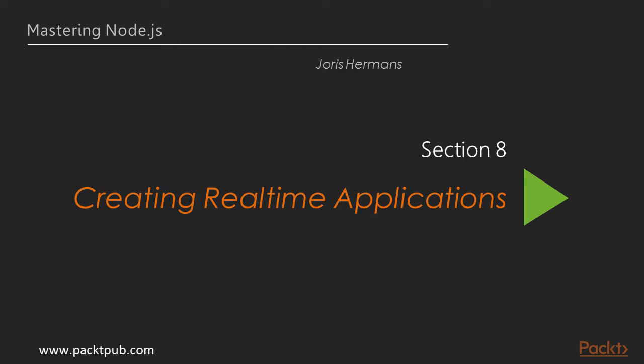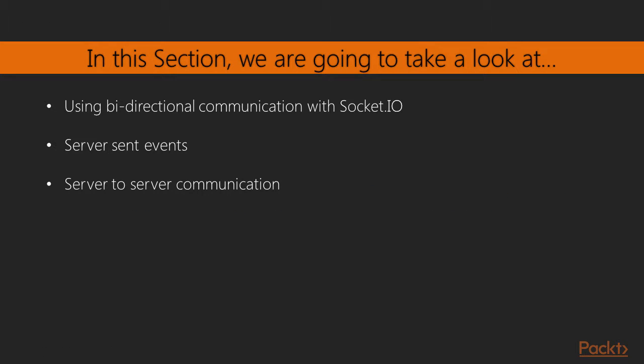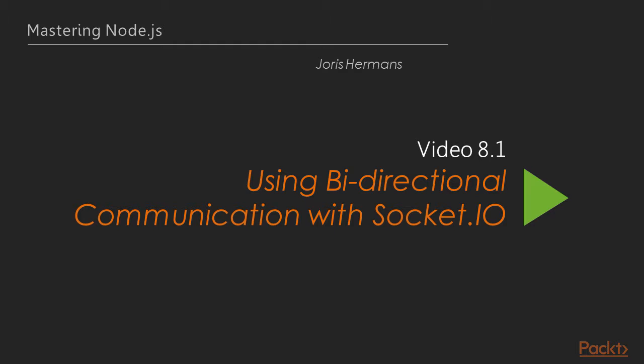Welcome to section 8: creating real-time applications. We will see how to create and build real-time applications in Node.js. In this section we will use Socket.io, a Node.js library to work with WebSockets and perform bidirectional communication. We will dive into server-sent events and look into server-to-server communication with UDP. Now we move on to the first video of this section, which deals with bidirectional communication with Socket.io.